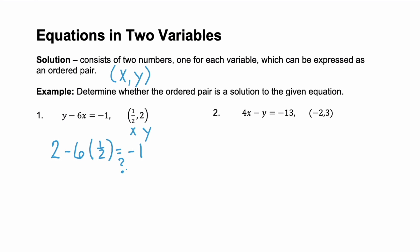Let's do the math. We keep the 2, then minus 6 times 1/2, that's 3, equals negative 1. Well, 2 minus 3 is negative 1. Does negative 1 equal negative 1? Yes it does. So yes, this is in fact a solution to that equation.